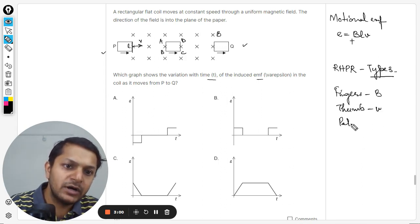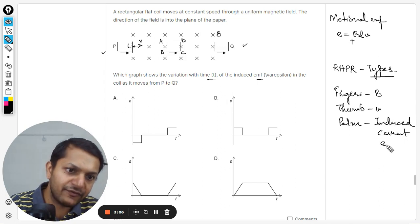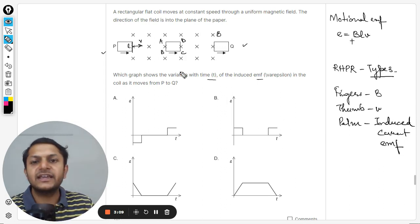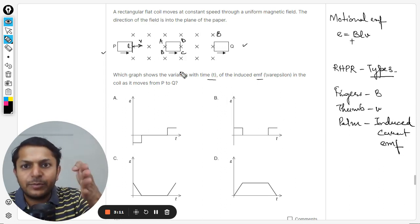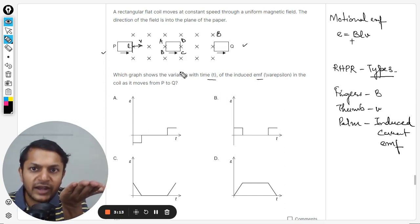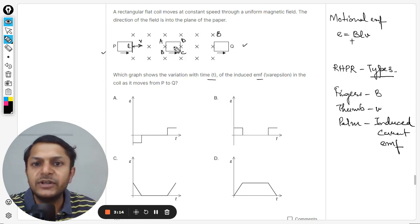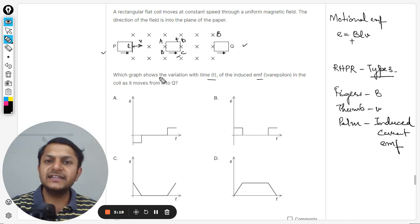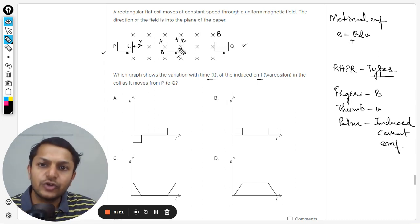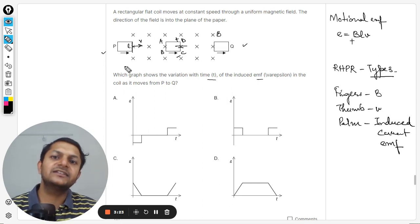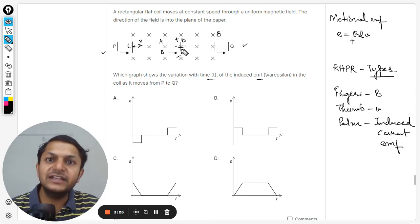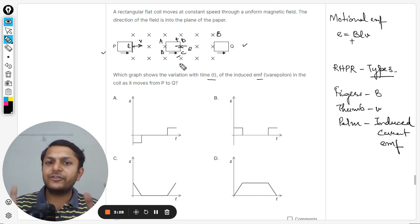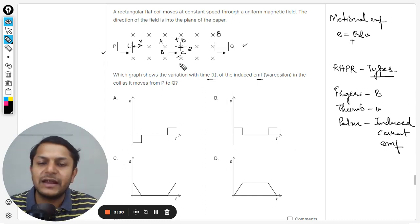Fingers is about the magnetic field, thumb is giving you the velocity of the conductor, and the palm will be giving you the direction of the induced current or induced EMF. Here the magnetic field is into the page and it is moving towards right hand side, so the EMF will be in the upward direction. D is going to become the positive end and C is going to become the negative end. So overall there is a battery now induced.